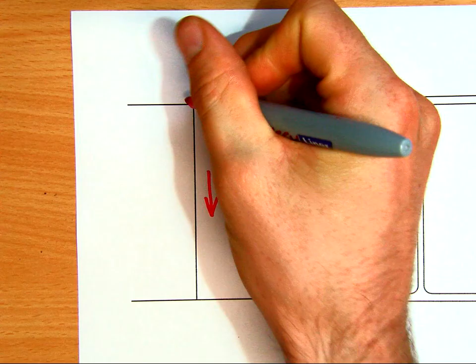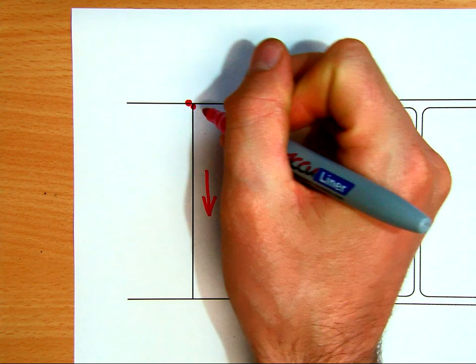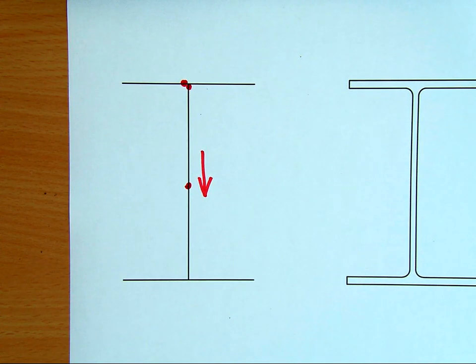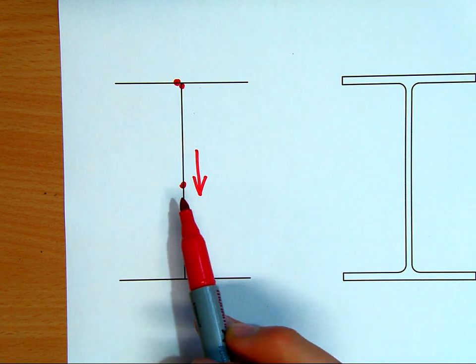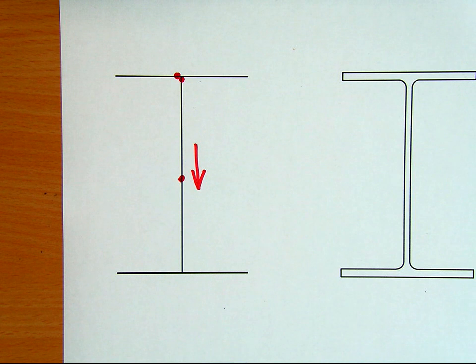We're going to now calculate the stresses at the critical positions. So, there's going to be various positions. Firstly, we're going to have a look at the section here, but just in the flange. Then, we're going to have a look at it here, at the top of the web, and then we're going to have a look at it here, right at the centroid in the middle, and we'll get a shear distribution across the whole section.